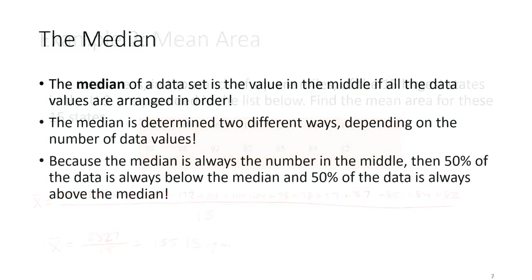The median of a data set is the value that's in the middle when all values are arranged in order. We determine the median two different ways depending on whether you have an even or odd number of data values. Because the median is always the number in the middle, we always know that 50% of the data is above the median and 50% is below.